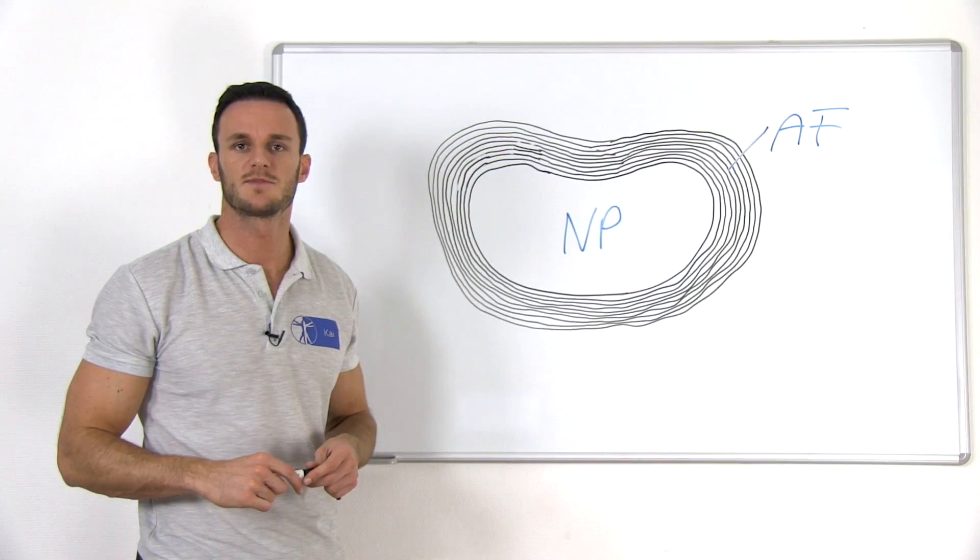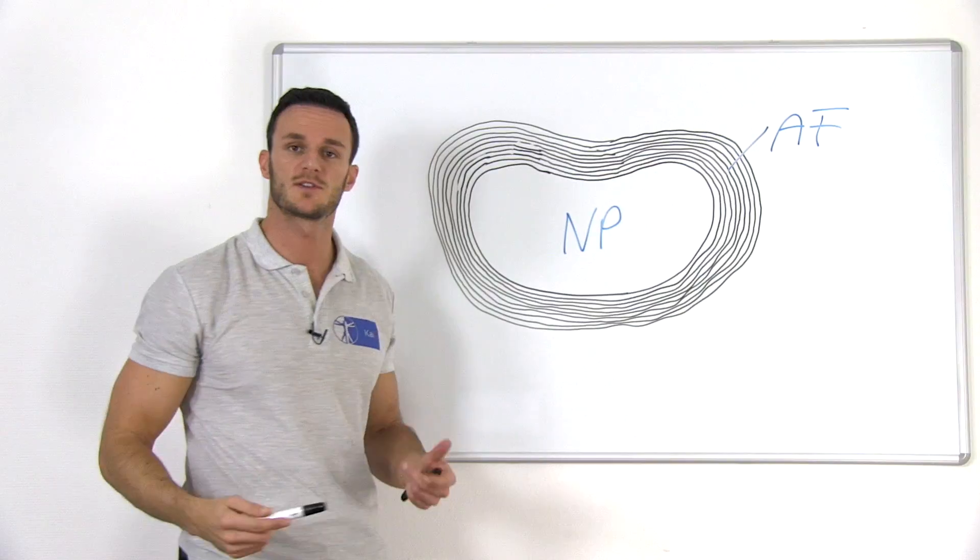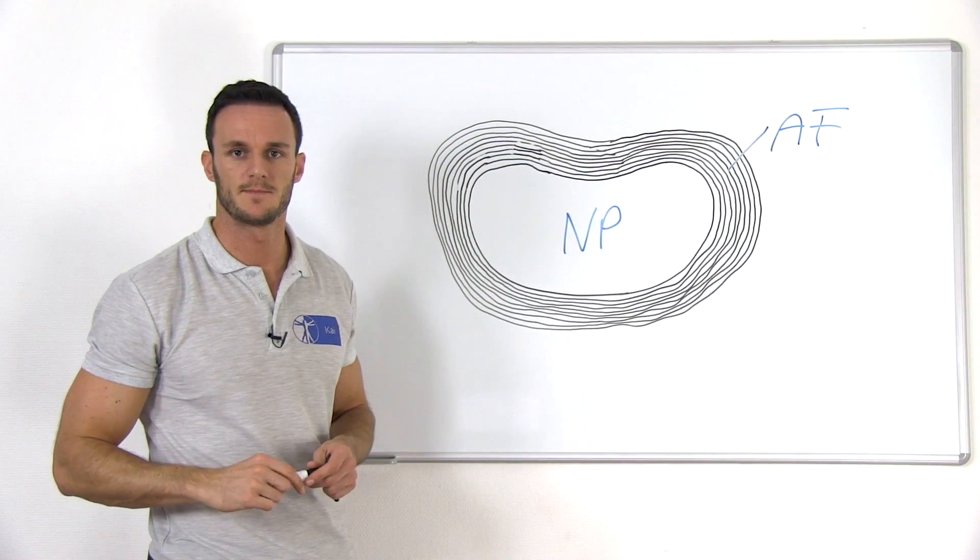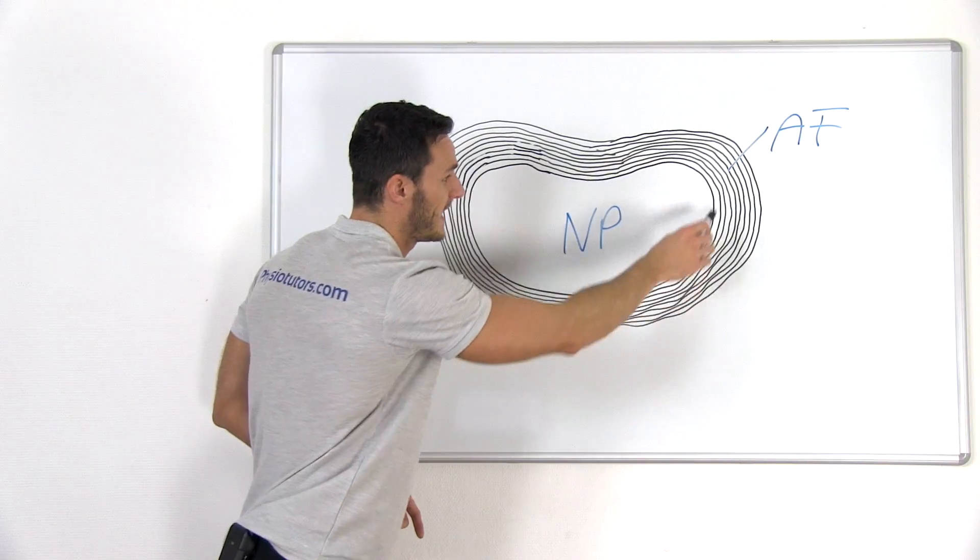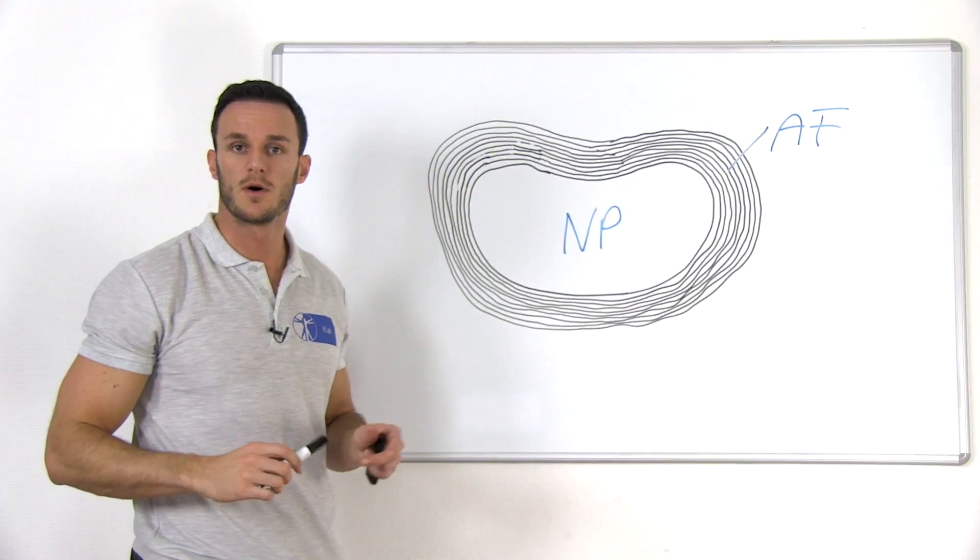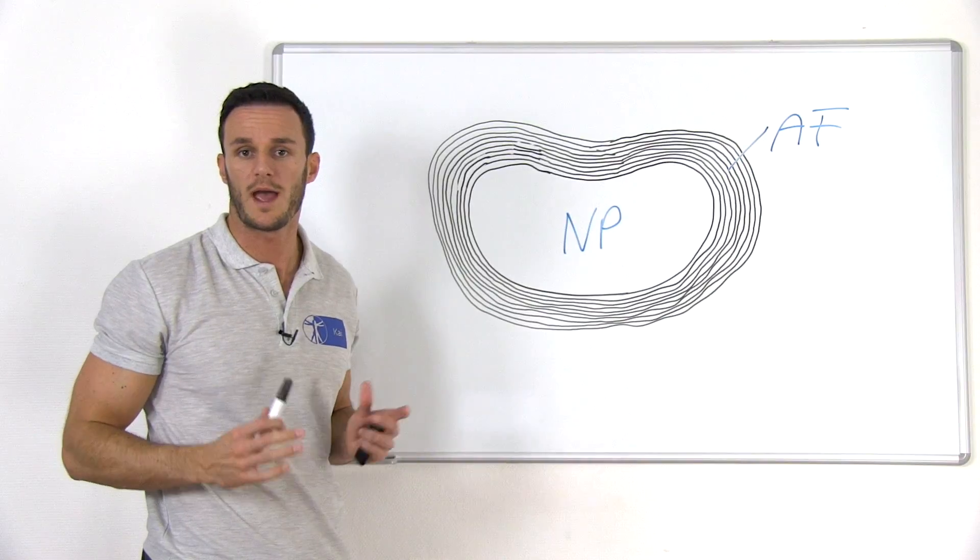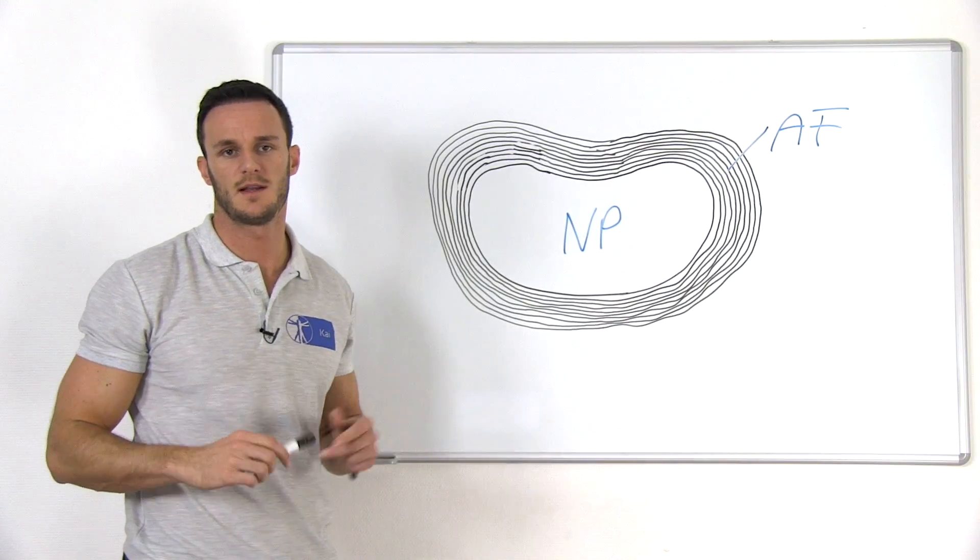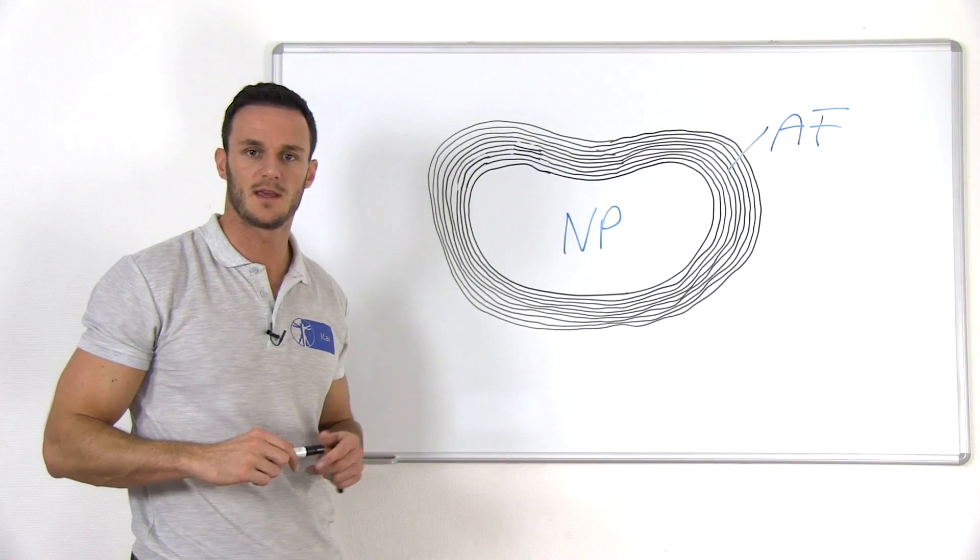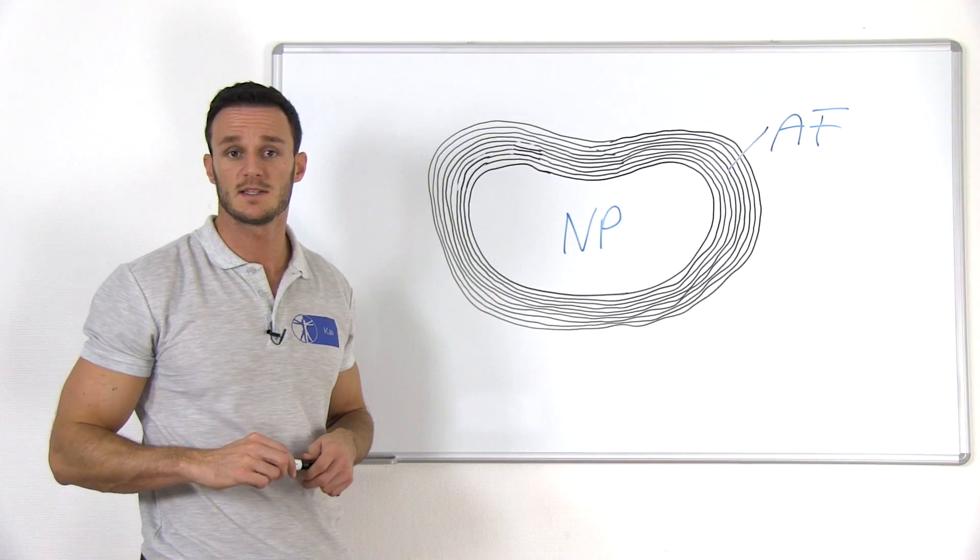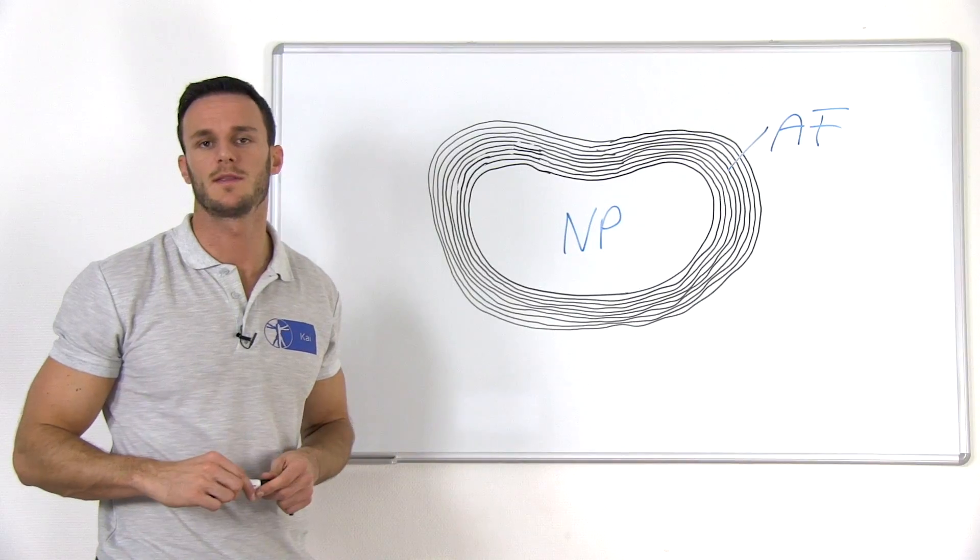If we look at the annulus fibrosis from the top, we can see that it consists of 10 to 20 sheets that are arranged around the nucleus and they are called the lamellae. They are somewhat thicker towards the center of the disc and anteriorly and laterally. Posteriorly, they are somewhat finer and more tightly packed and the whole annulus posteriorly is thinner than the rest. The lamellae are actually not continuous, and in around 40% of cases, especially in the middle portion of the annulus, they might fuse with superficial or deeper lamellae.